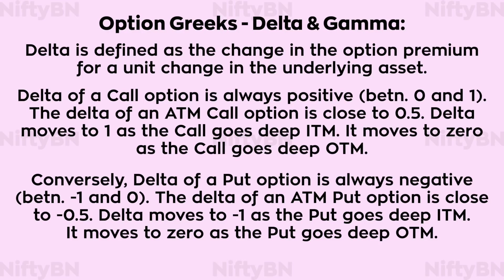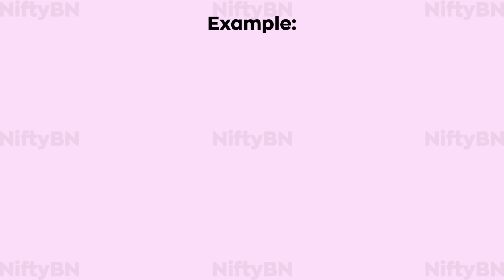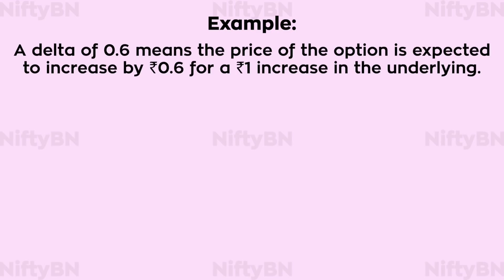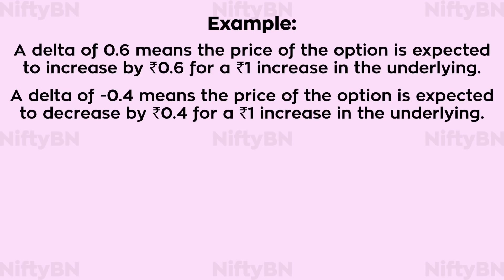As the price of the underlying asset increases, you would expect call option prices to rise and put option prices to fall. For example, a Delta of 0.6 means the price of the option is expected to increase by ₹0.6 for a ₹1 increase in the underlying asset price. A Delta of minus 0.4 means the price of the option is expected to decrease by ₹0.4 for a ₹1 increase in the underlying asset price.